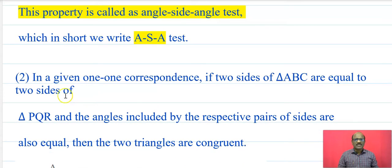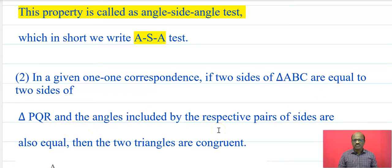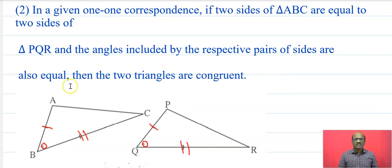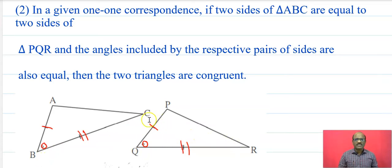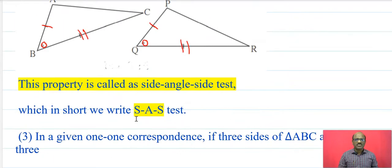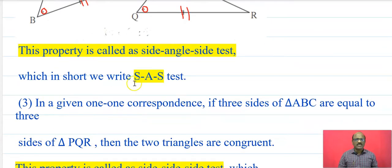Now the next test: in a given one-to-one correspondence, if two sides of triangle ABC are equal to two sides of triangle EQR and the angles included by the respective pairs of sides are also equal, then the two triangles are congruent. In triangle ABC and triangle EQR, segment AB is congruent to segment EQ, angle B is congruent to angle Q, and segment BC is congruent to segment QR. Therefore triangle ABC is congruent to triangle EQR, and this test is known as the SAS test.